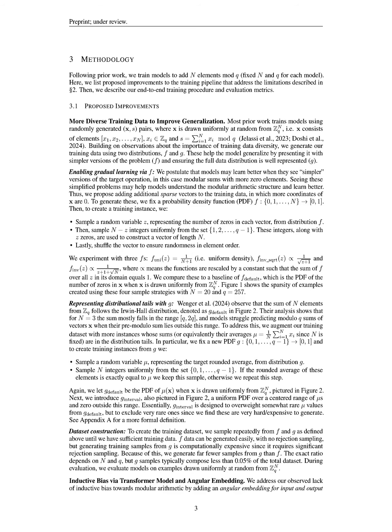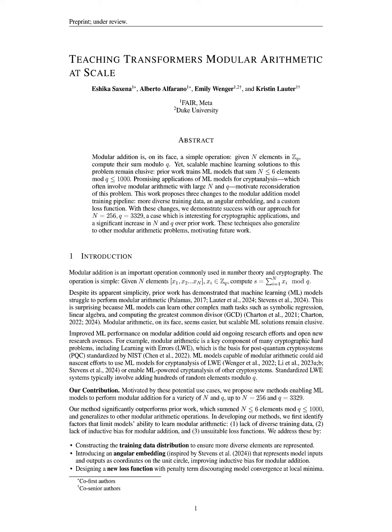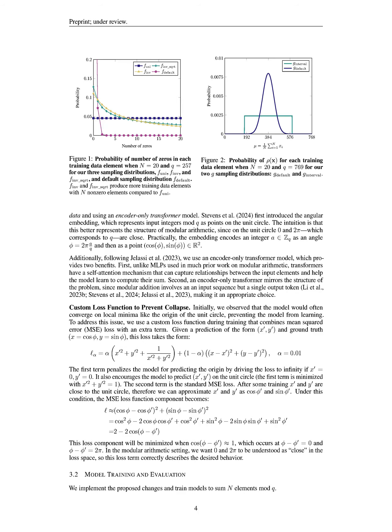First, we enhance data preparation by generating a diverse training dataset using two probability distributions, f and g. The distribution f introduces simpler training examples with more zero elements, while g ensures representation of distributional tails, which are critical for generalization.